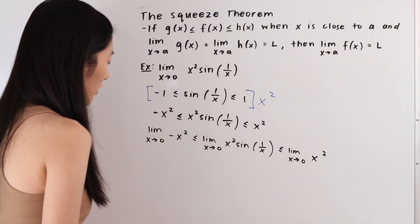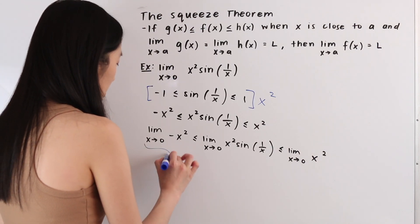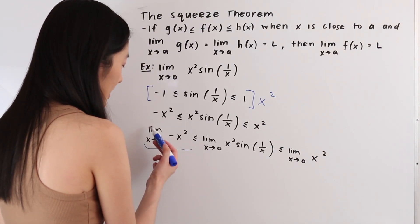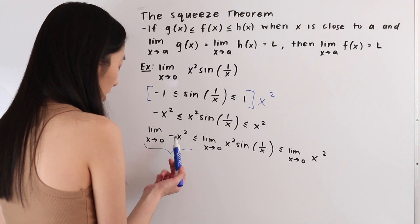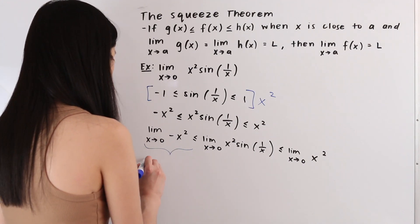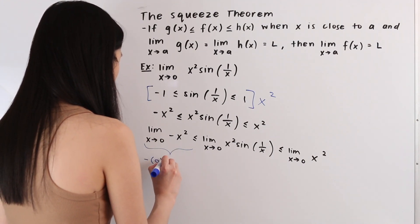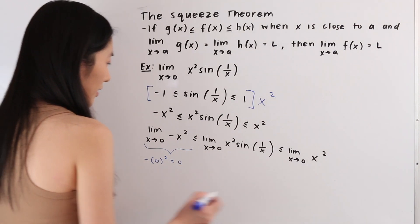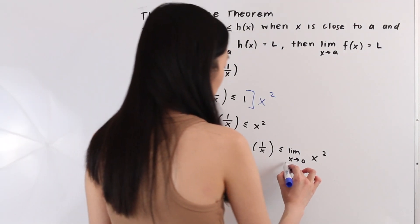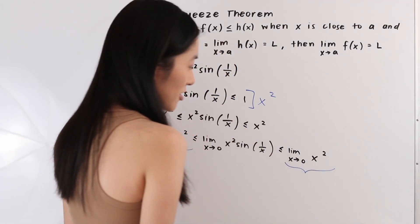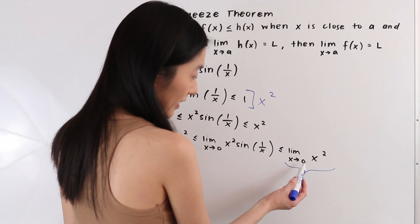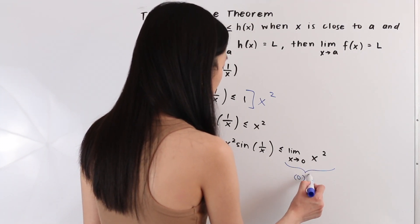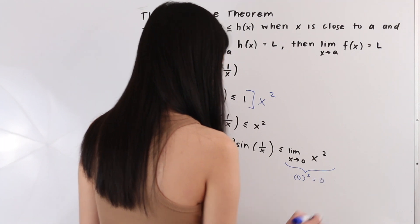From here, we're going to use the substitution method to determine what these limits are equal to — plugging 0 in for x. So we have negative 0² which equals 0, and also 0² which equals 0.